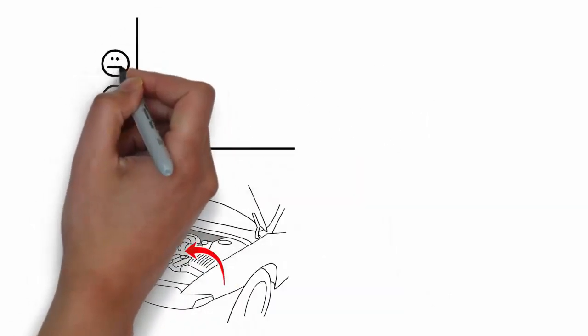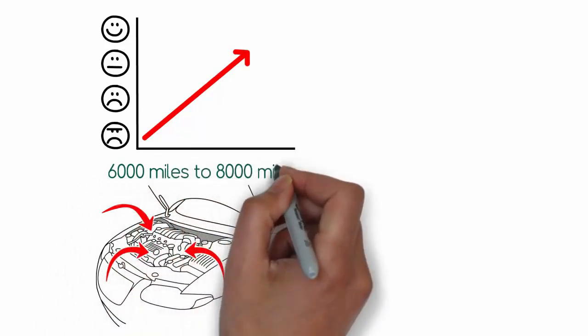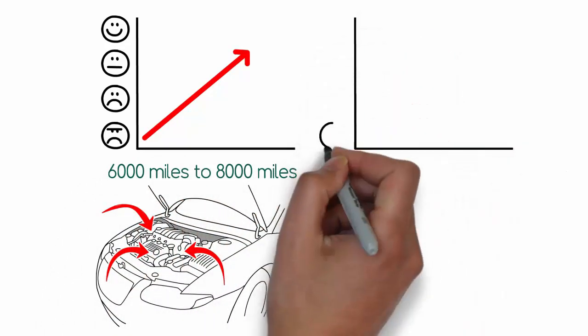Synthetic blend change intervals range 6,000 miles to 8,000 miles, depending on the car's driving in the city or freeway.